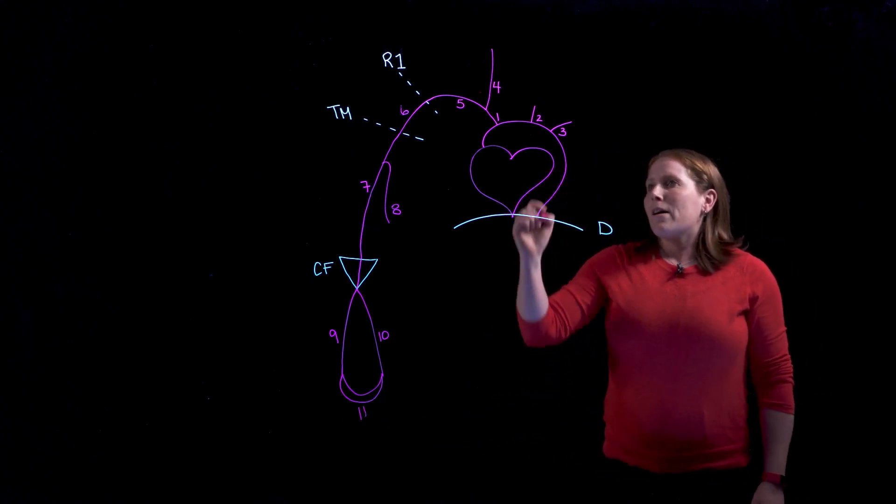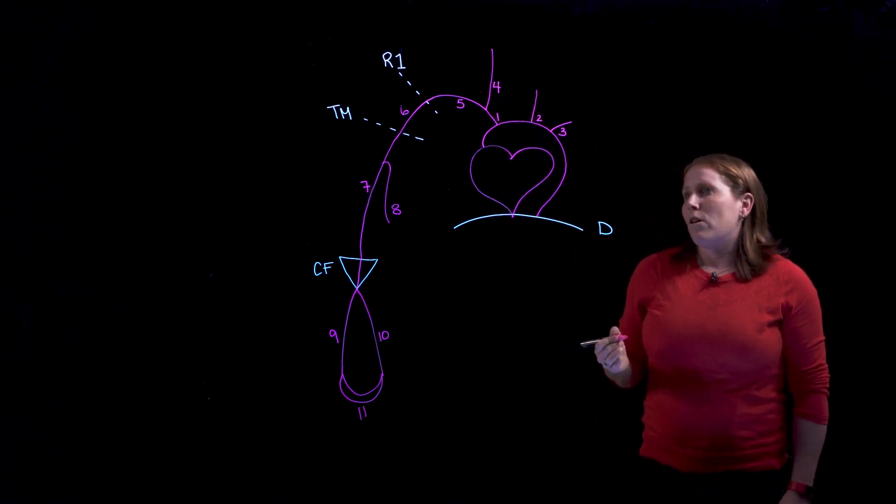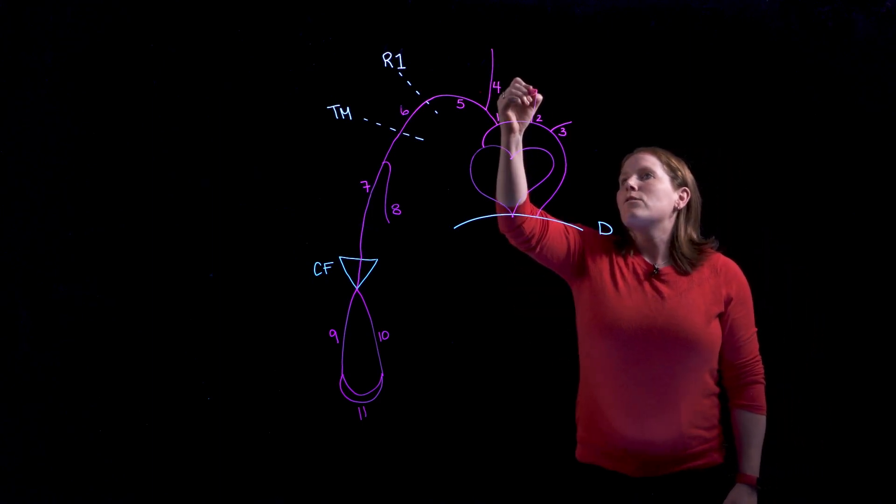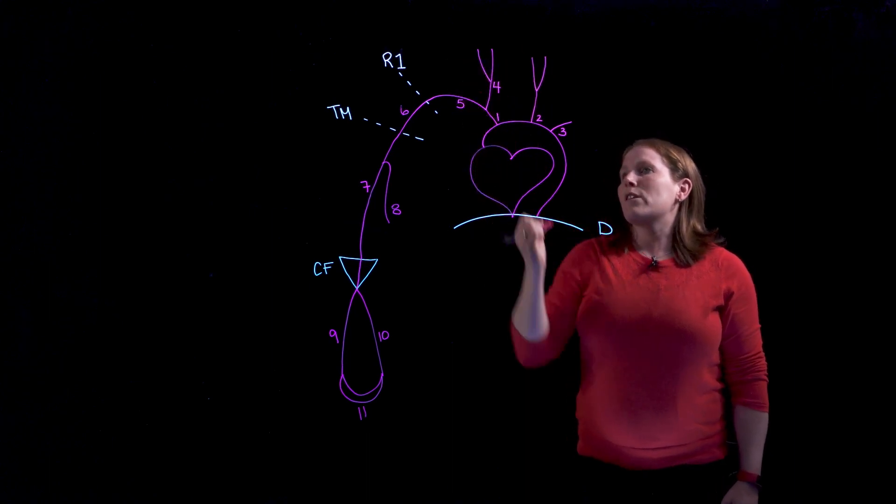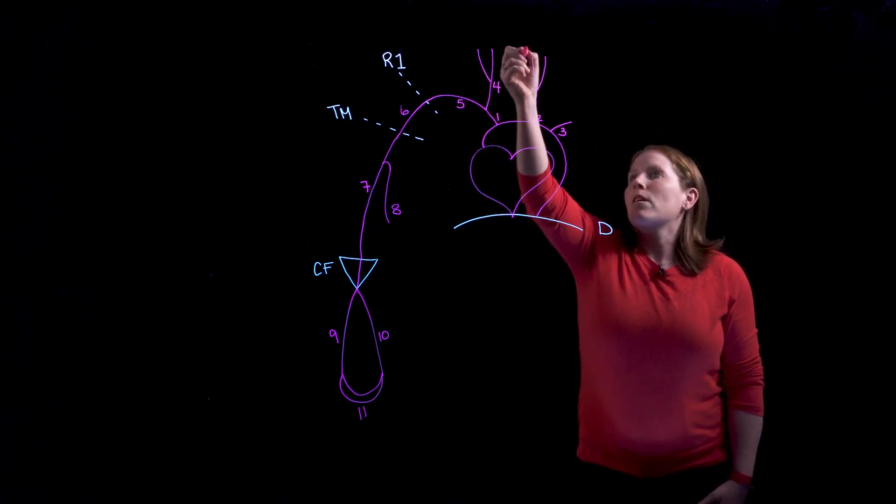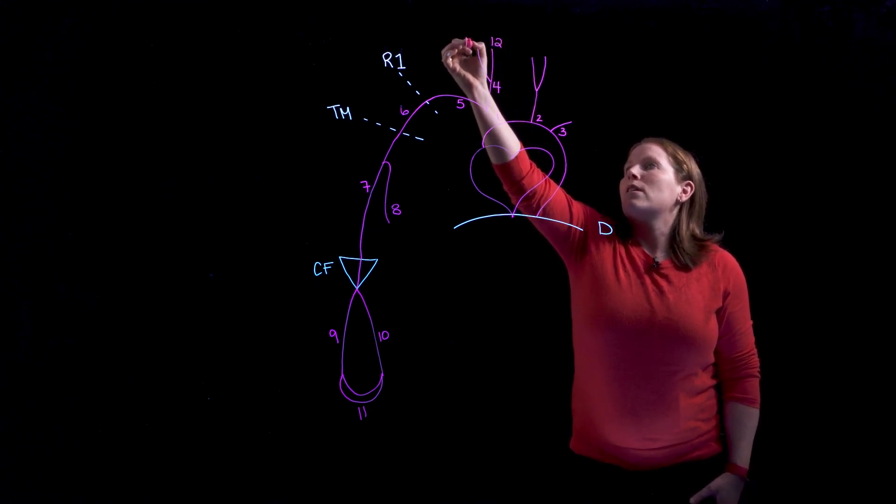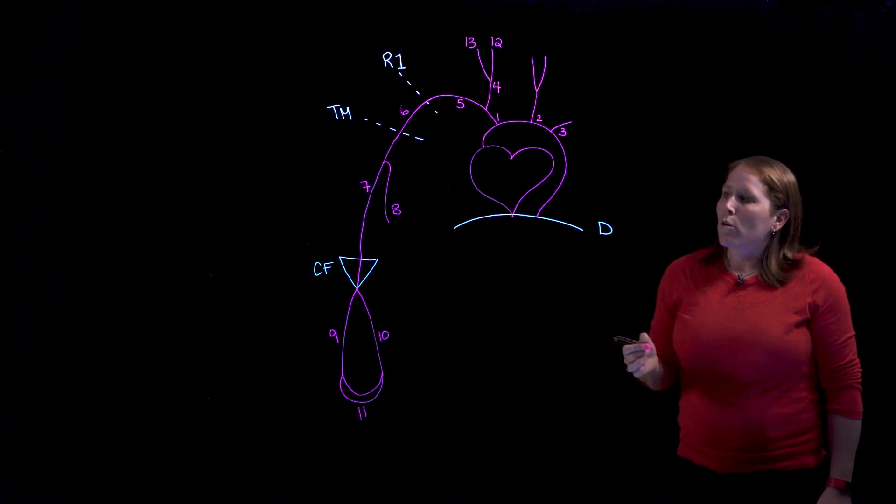If we look back up at our common carotid arteries the word common is like the word trunk and it indicates that artery is going to branch again. So let's do that we'll show each of our common carotid arteries branching and we'll end up with our internal carotid arteries and our external carotid arteries and those are going to be important for a future video where we look at the blood supply to the brain.